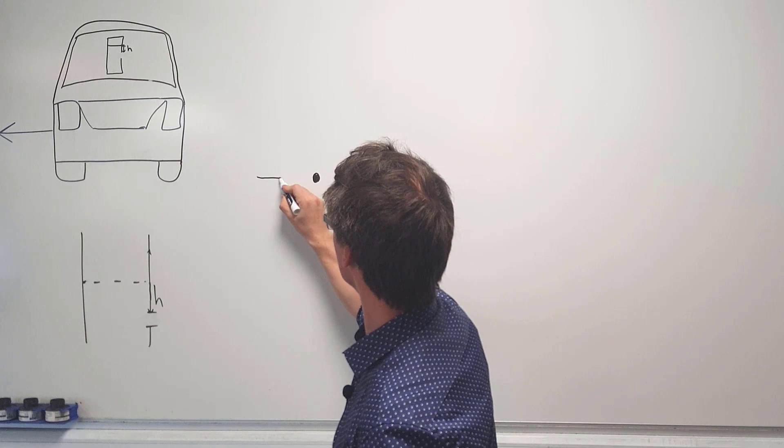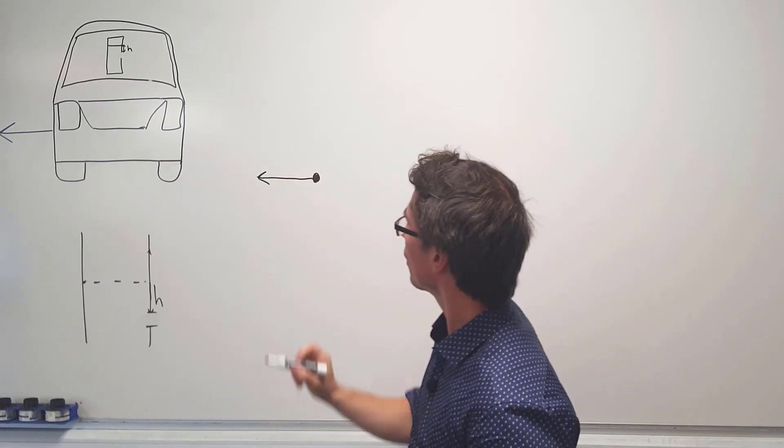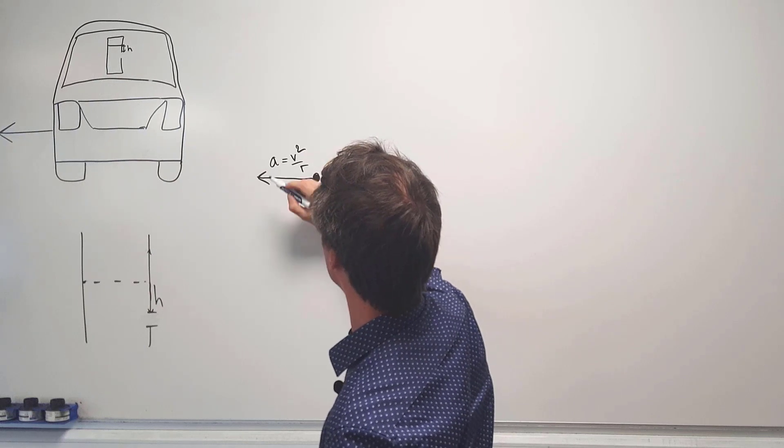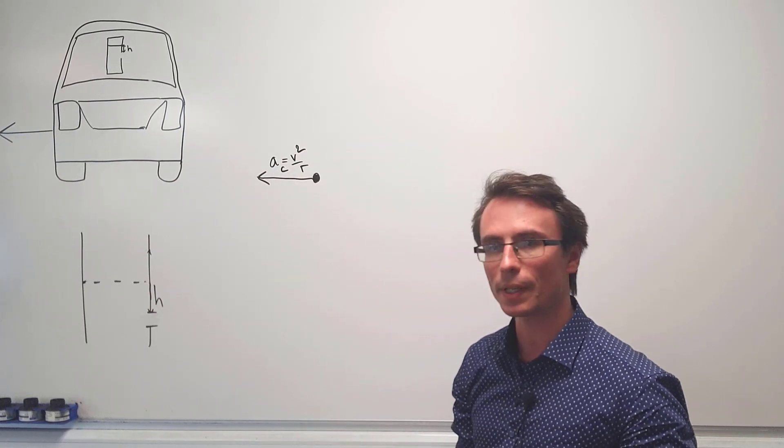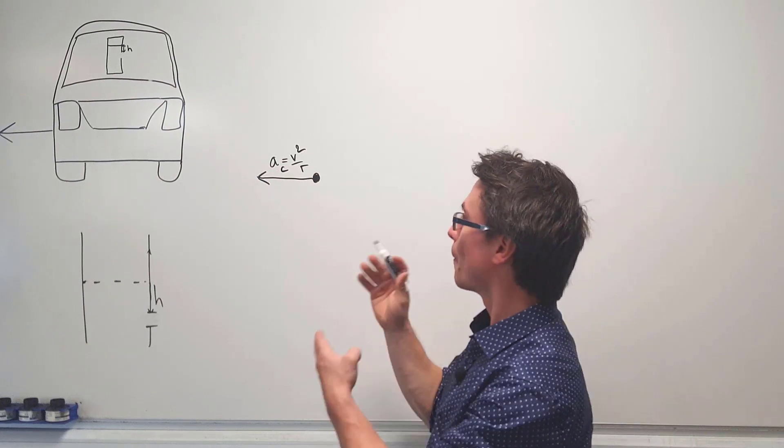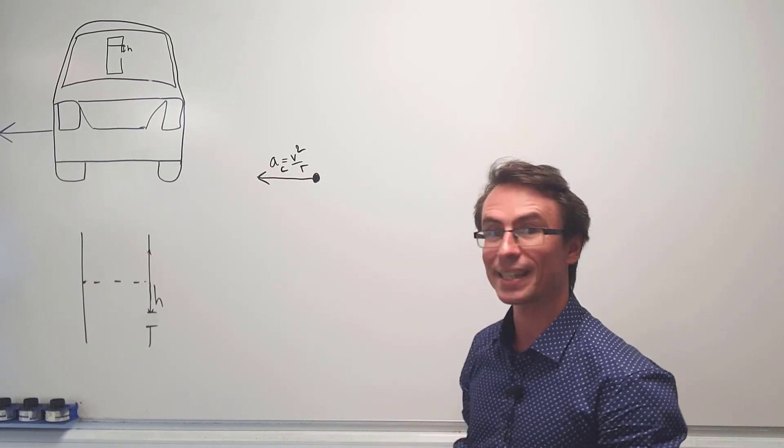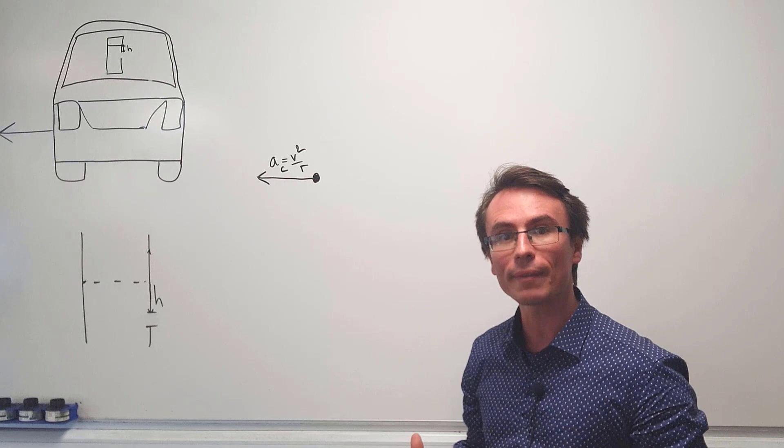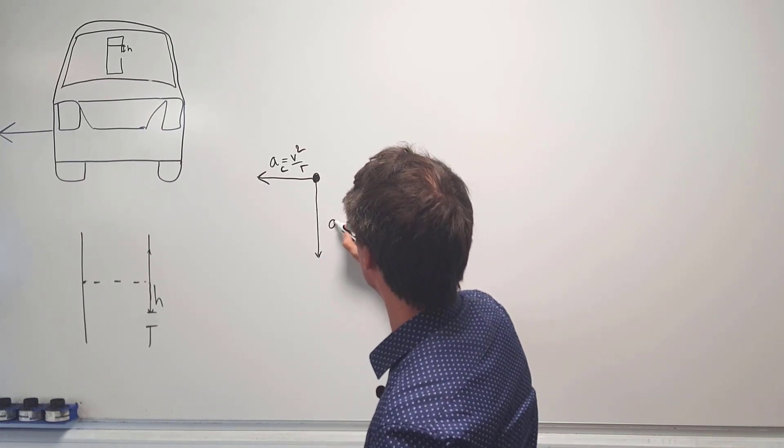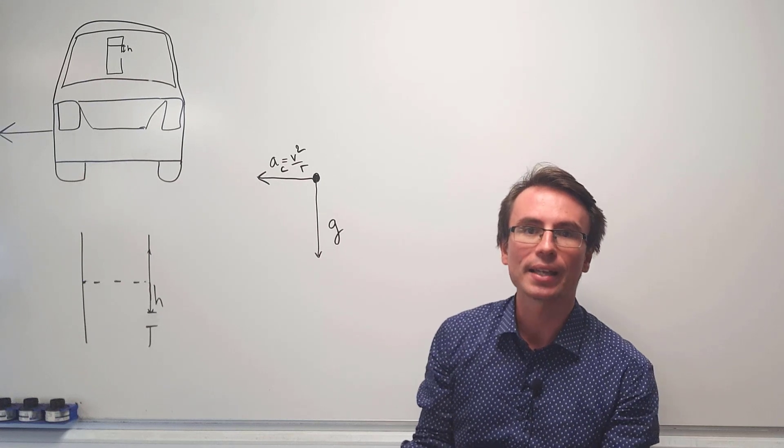First of all there's going to be some centripetal acceleration which is just going to be V squared over R. That's going to be to the left because the car is turning to the left. But also there's going to be an acceleration due to gravity which will be just vertically downwards, and let's label this as G.